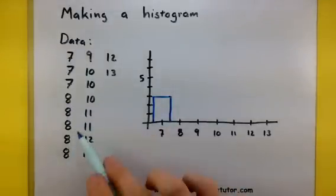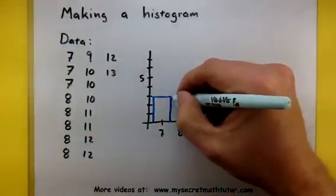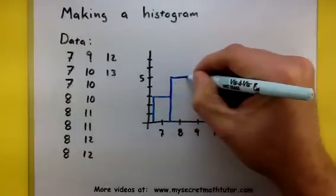When I get to my 8 category, I count up how many of them I have. 1, 2, 3, 4, 5. And I make a bar that goes up to 5.